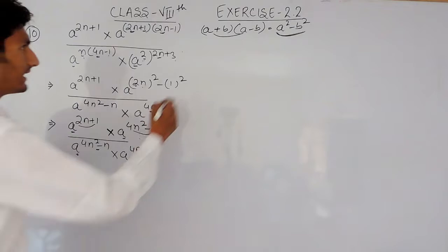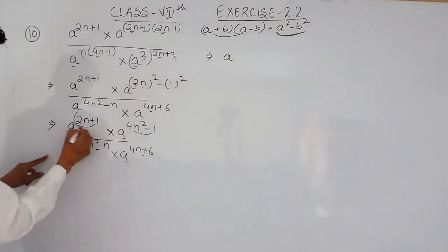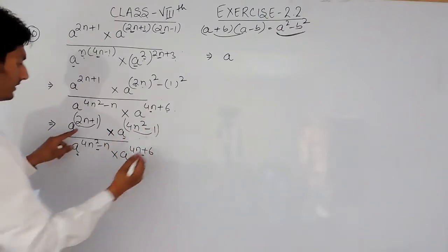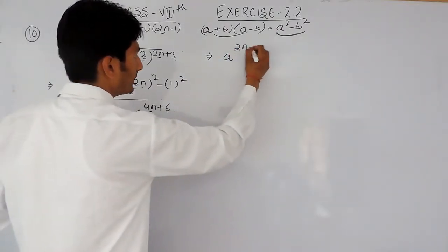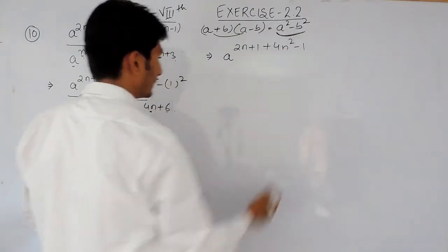So this can be written as, this is a is the base, and when this power is added to this power, it will give 2n plus 1 plus 4n square minus 1.